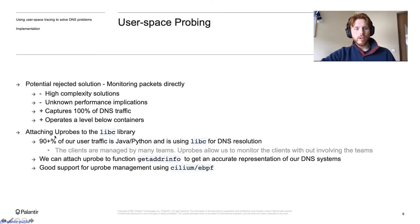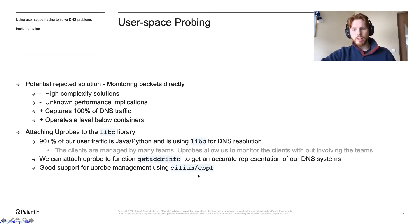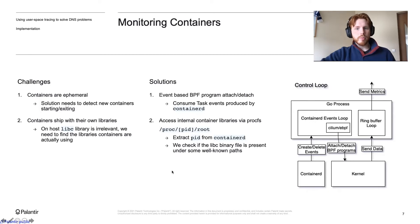The solution we ended up going with is Uprobes, attaching Uprobes to the libc library. 90% of our user traffic are either Java or Python clients, and they use libc for DNS resolution. These clients are managed by many different teams, and BPF gives us a single point to monitor all of them at the same time. We do this by attaching a Uprobe to the getaddrinfo function, which gives us an accurate representation of our DNS system. Using Uprobes also meant we can use the Cilium eBPF library to abstract away a lot of low-level details. The Cilium library gave us primitives to manage individual BPF programs.